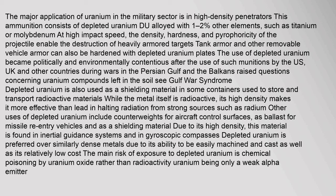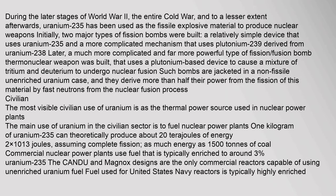The main risk of exposure to depleted uranium is chemical poisoning by uranium oxide rather than radioactivity, uranium being only a weak alpha emitter. During World War II, the Cold War, and to a lesser extent afterwards, uranium-235 has been used as fissile explosive material to produce nuclear weapons. Two major types of fission bombs were built: a relatively simple device using uranium-235, and a more complicated mechanism using plutonium-239 derived from uranium-238. Later, a thermonuclear weapon was built using a plutonium-based device to cause a mixture of tritium and deuterium to undergo nuclear fusion, jacketed in a non-fissile unenriched uranium case.